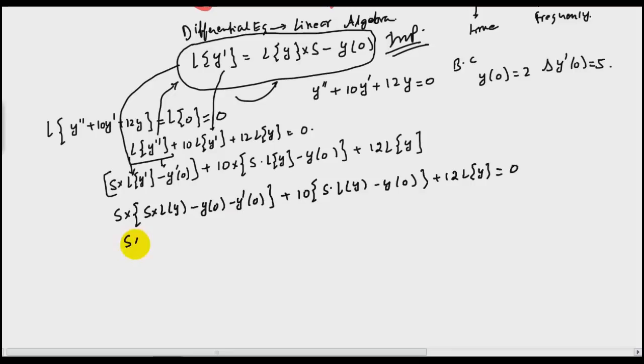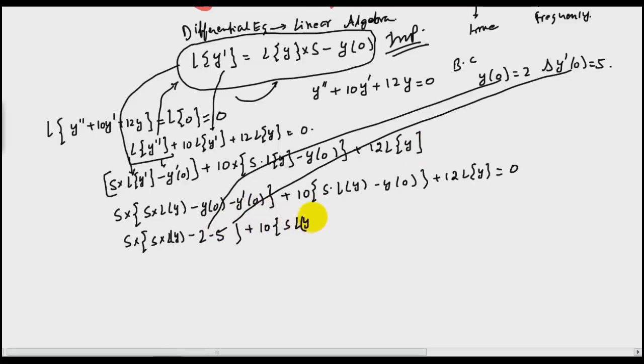So what I can write: s into s into Laplace of y minus y0. So y0 is 2 minus y dash 0, y dash 0 is 5, plus 10 times s into Laplace of y minus y0. So it is 2 plus 12 times Laplace of y. This equals 0.